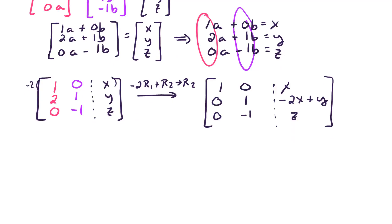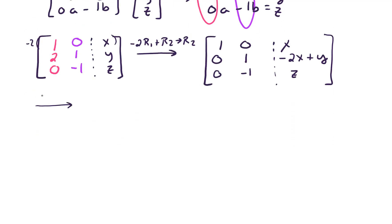Okay, so far so good. Lastly, let's add row 2 plus row 3 and put it in row 3. And when we do that, the first two rows are unchanged. And our third row, we get 0, 0, and now we get negative 2x plus y plus z.